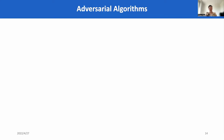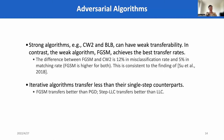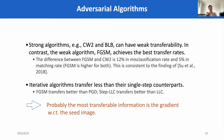The third factor we consider is adversarial algorithms, which is also the common focus of previous studies. We found that strong algorithms, such as CW2, can have weak transferability. In contrast, the weak algorithm FGSM achieves the best transfer rates. This is consistent with findings in lab environments. We also found that iterative algorithms transfer less than their single-step counterparts. This suggests that probably the most transferable information is the gradient with regard to the same image, as other attacks still get worse transfer rates.